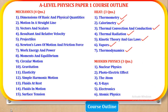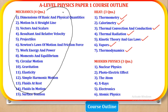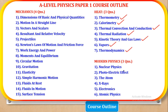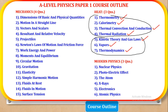Before we start, let's first look at the course outline of this paper. Physics Paper 1 is divided into three parts. The first part is Mechanics, and four questions come from this part. The next part is Heat, and three questions come from this part. The third part is Modern Physics, and three questions also come from that part. The first four topic tests were already done. Now in this test, we are going to cover the last three topics in the section of Heat.